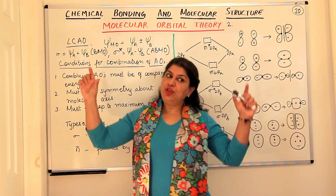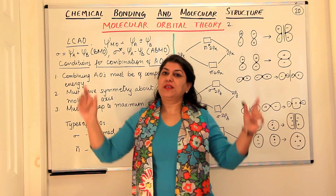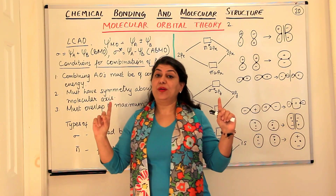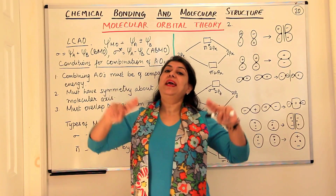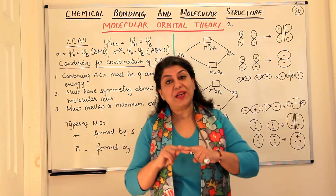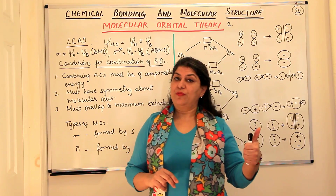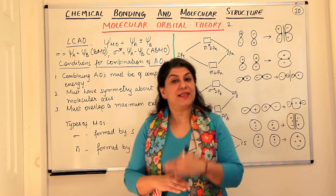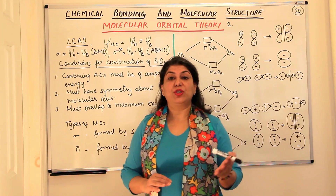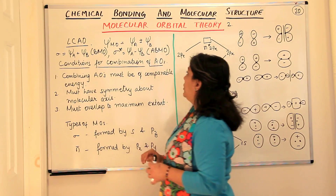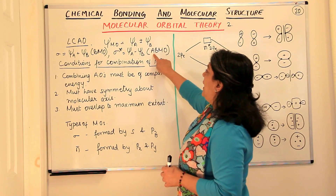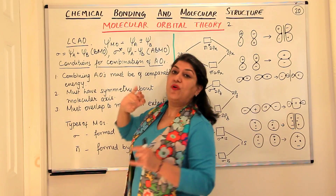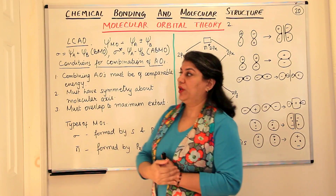So we took the atomic orbitals, the wave functions for atomic orbitals, and conceptually we understand that when these waves interfere constructively, it results in the formation of a bonding molecular orbital, and when they interfere destructively, it results in the formation of an anti-bonding molecular orbital.